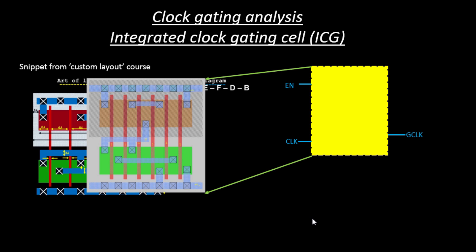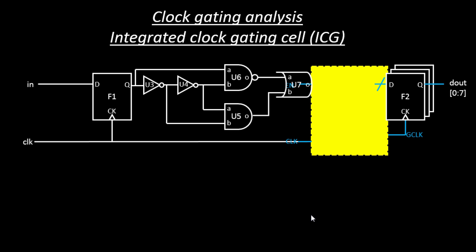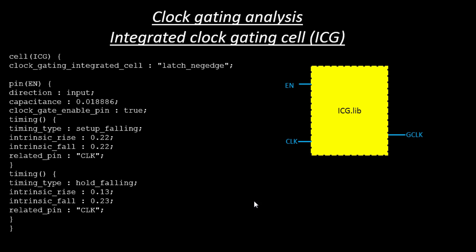That's why we avoid automated routing and hand-route this block instead. We take this particular block separately and plug it into our final circuitry. The only thing needed for this block is the dot-lib. The ICG dot-lib looks something like this. We'll stop here, and in the next video I'll explain each and every section of the ICG dot-lib — how it looks. So let's start with the ICG dot-lib in the next video.